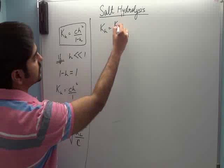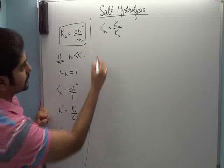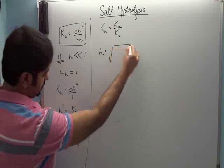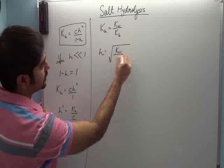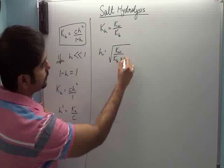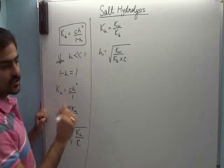Hamne abhi abhi ye prove kiya tha that KH is equal to Kw by Kb. To ye value substitute karte. So H becomes KH ki jagah pe Kw upon Kb into C. Ye aagayi H ki value.